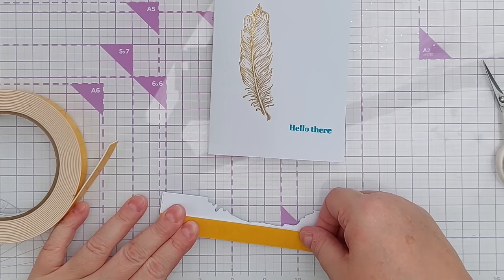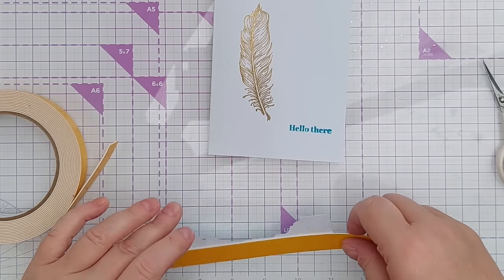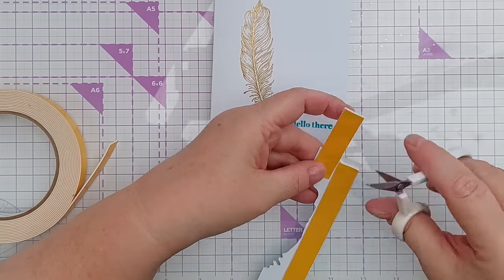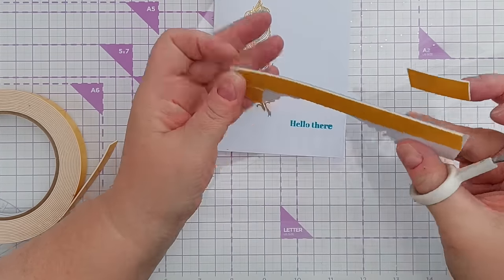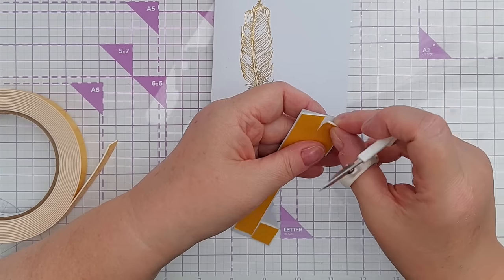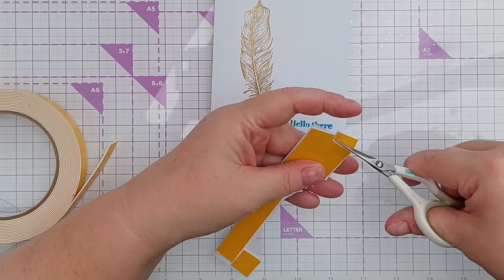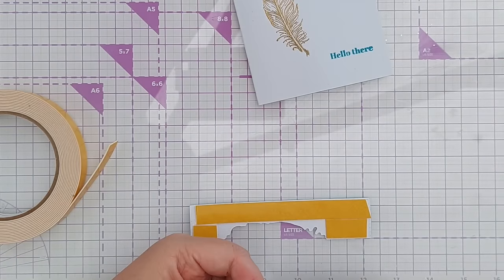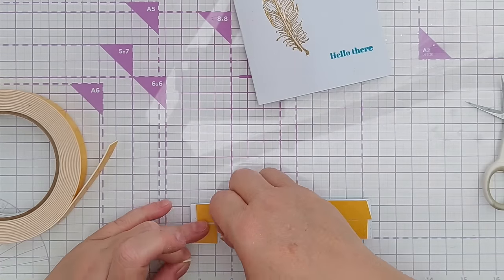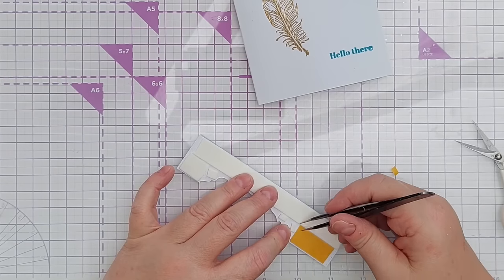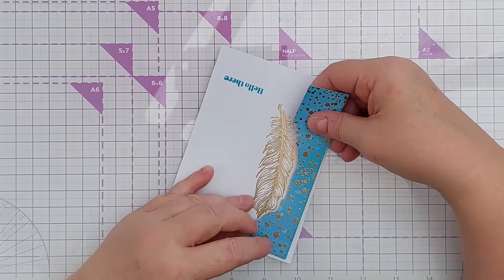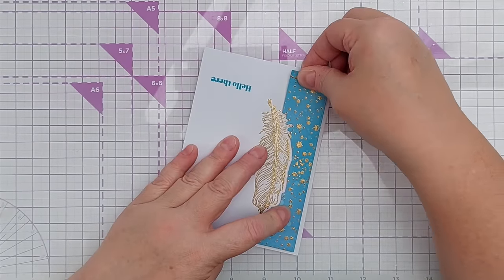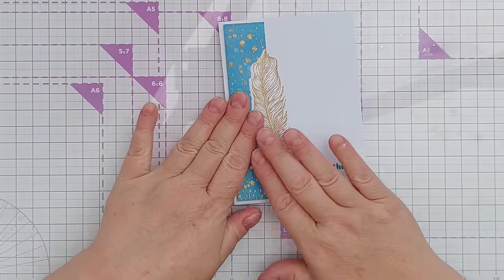To attach this, I'm going to pop it up on some one millimeter thick craft foam tape. Just gives it that little bit of lift but shouldn't affect it going through the post—should still be able to go as a regular letter rather than a large letter in the UK at least.